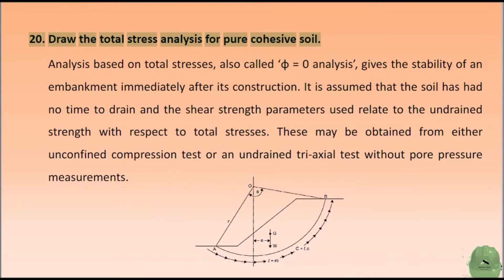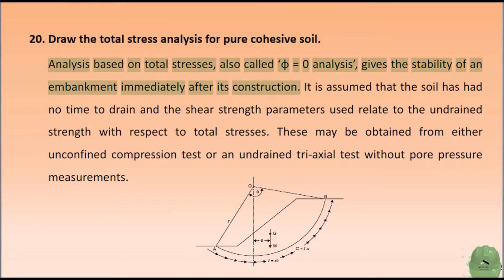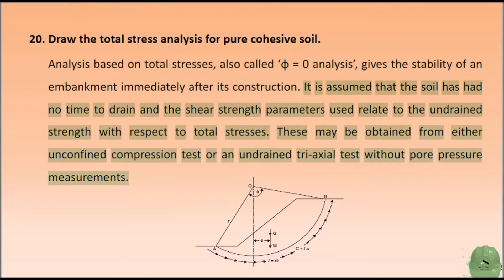Draw the total stress analysis for pure cohesive soil. Analysis based on total stresses, also called Φ = 0 analysis, gives the stability of an embankment immediately after its construction. It is assumed that the soil has had no time to drain and the shear strength parameters used relate to the undrained strength with respect to total stresses. These may be obtained from either unconfined compression test or an undrained triaxial test without pore pressure measurements.